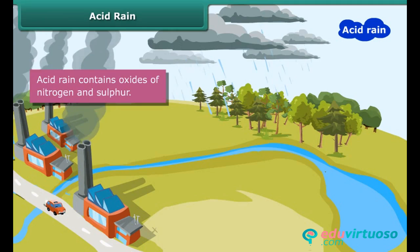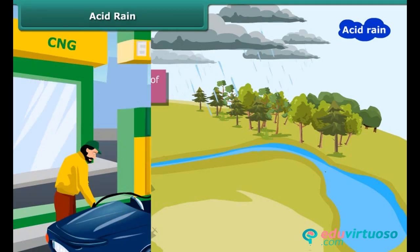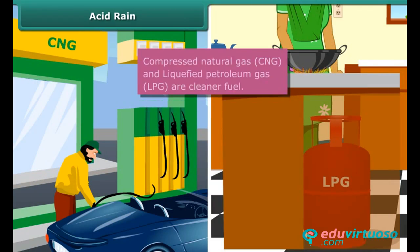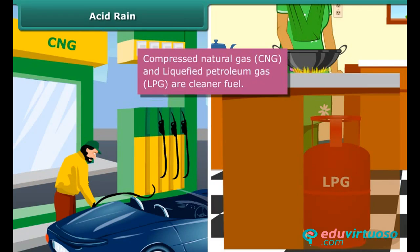Use of clean fuels like compressed natural gas, CNG, and liquefied petroleum gas, LPG, can reduce the acidity of rain.